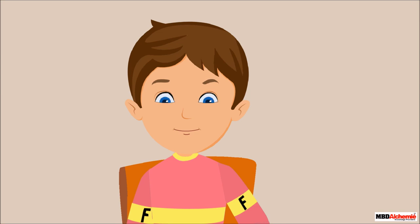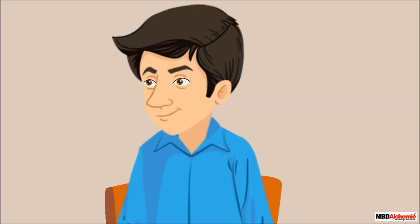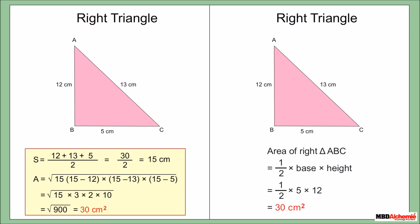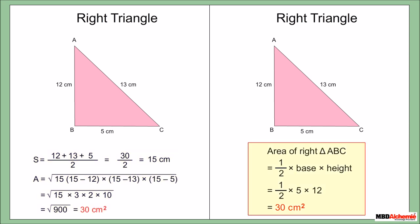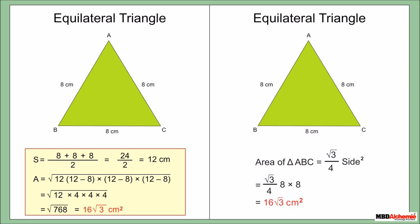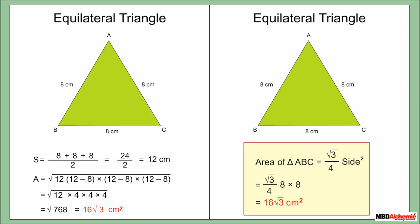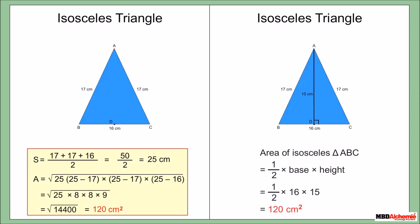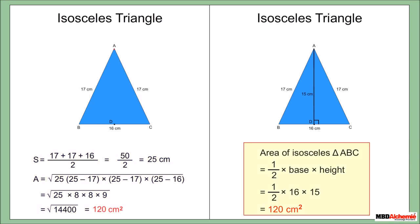Sid asks if Heron's formula can also be used for other types of triangles. Neil's father confirms it can. Using Heron's formula, the area of the right triangle is 30 cm², the area of the equilateral triangle is 16√3 cm², and the area of the isosceles triangle is 120 cm² — all matching the results obtained using their respective specific formulas.